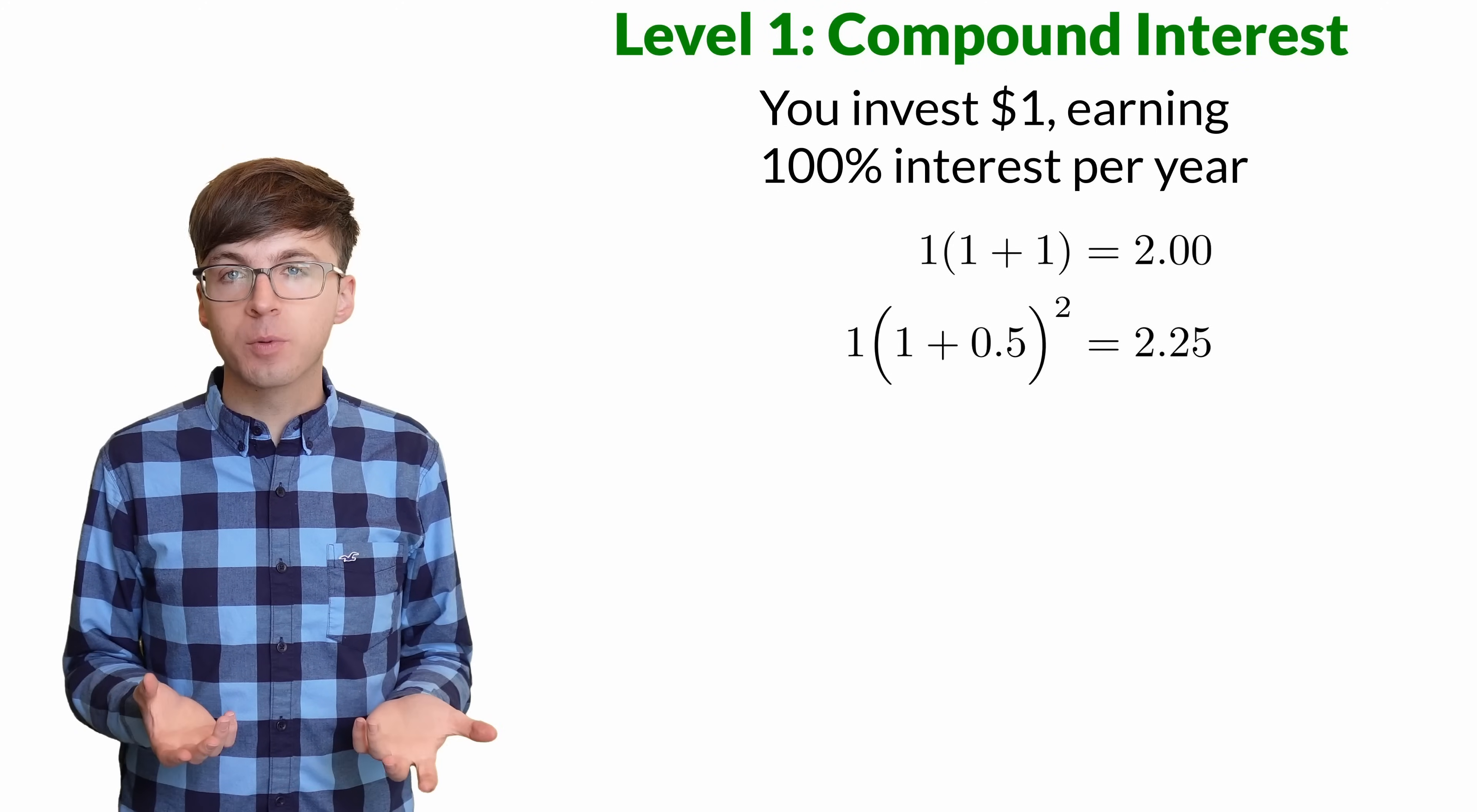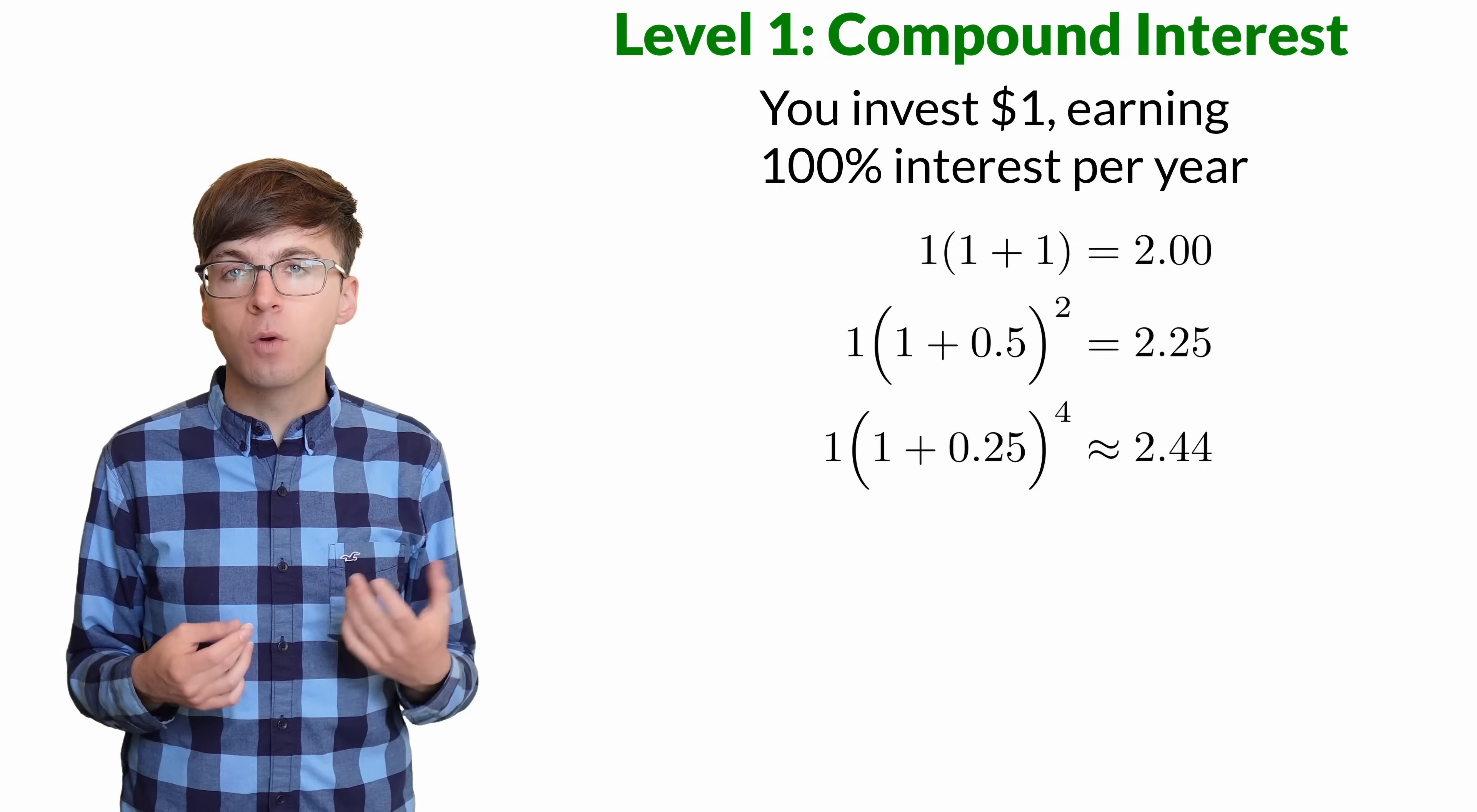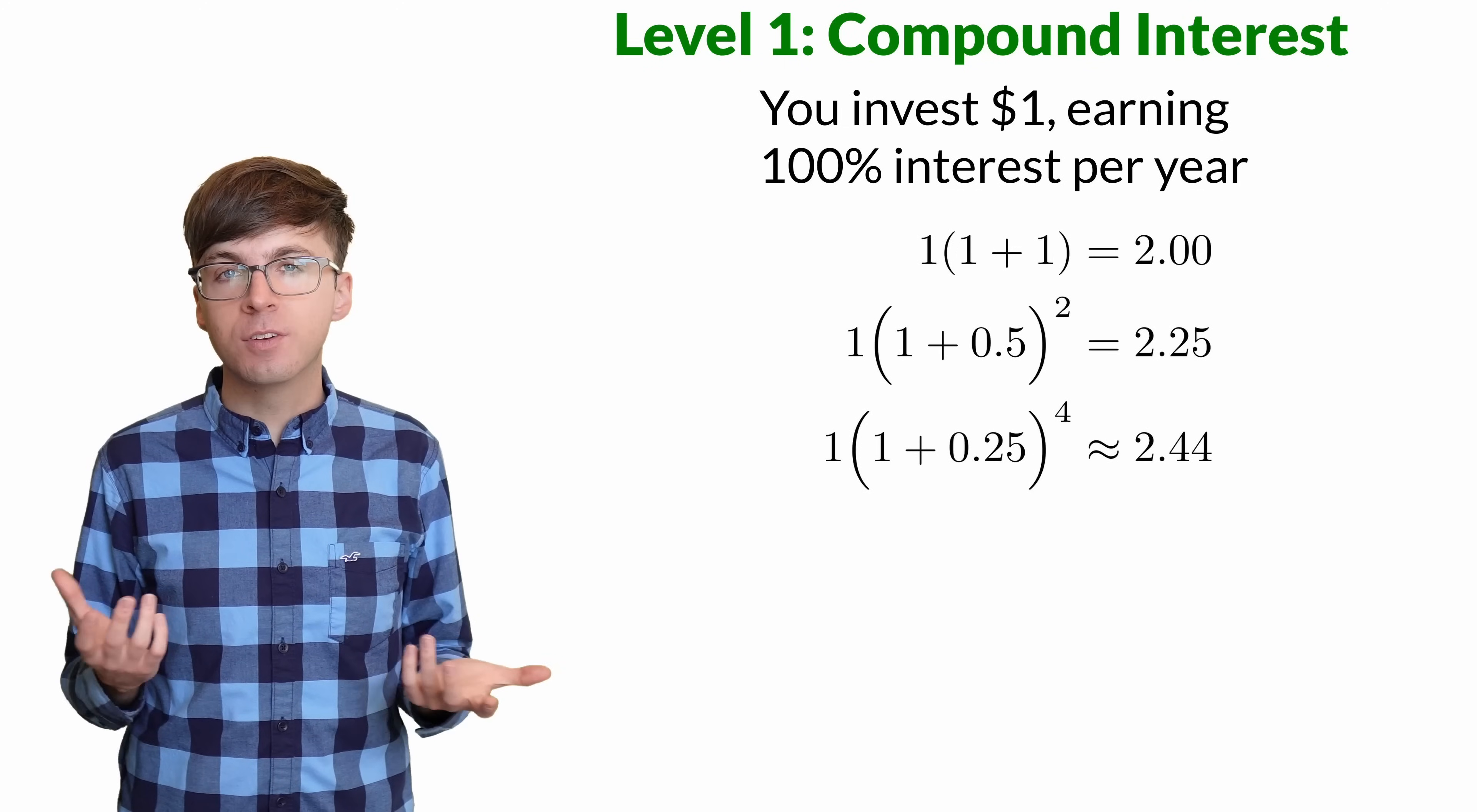What if you're paid four times per year? Now you get 25% interest each period for four periods during the year. You start with $1 and then multiply by 1.25 four times, so 1.25 to the fourth. At the end of the year, you have around $2 and 44 cents. We see the more often the interest is compounded, the more interest you'll earn.